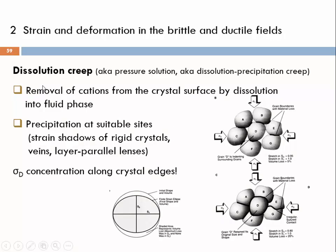Let's talk about dissolution creep, which is also known as pressure solution or dissolution precipitation creep. The terms already suggest that there is a fluid present, something into which you can dissolve ions from crystal surfaces. This is very different from volume diffusion or grain boundary diffusion creep, which are normally dry processes. There might be pore space in between grains, and in the pore space and along grain boundaries you might find a hydrothermal fluid.